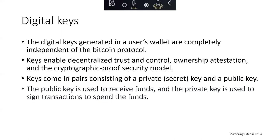In the payment portion of a Bitcoin transaction, the recipient's public key is represented by its digital fingerprint, called a Bitcoin address, which is used in the same way as the beneficiary name on a check — for example, pay to the order of. In most cases, a Bitcoin address is generated from and corresponds to a public key. However, not all Bitcoin addresses represent public keys; they can also represent other beneficiaries such as scripts. Bitcoin addresses abstract the recipient of funds, making the transaction destination flexible, similar to paper checks. The Bitcoin address is the only representation of the keys that users will routinely see, because this is the part they need to share with the world so they can get paid.